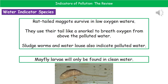Considering indicator species in water first, one key one we can use is the rat tail maggot — you can see a picture at the bottom. Rat tail maggots are able to survive in very low oxygen waters because their tail acts like a snorkel, allowing them to breathe oxygen from above the polluted water. That personal snorkel means they can survive in low oxygen conditions.